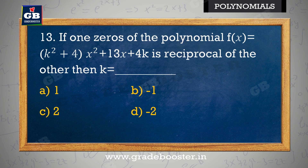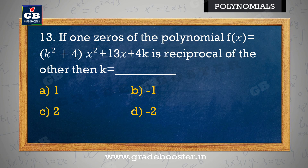If one zero of the polynomial f(x) = (k² + 4)x² + 13x + 4k is the reciprocal of the other, then k is equal to: polynomial f(x) = (k² + 4)x² + 13x + 4k ka ek zero doosre ka reciprocal hai, to k = a) 1, b) −1, c) 2, d) −2.